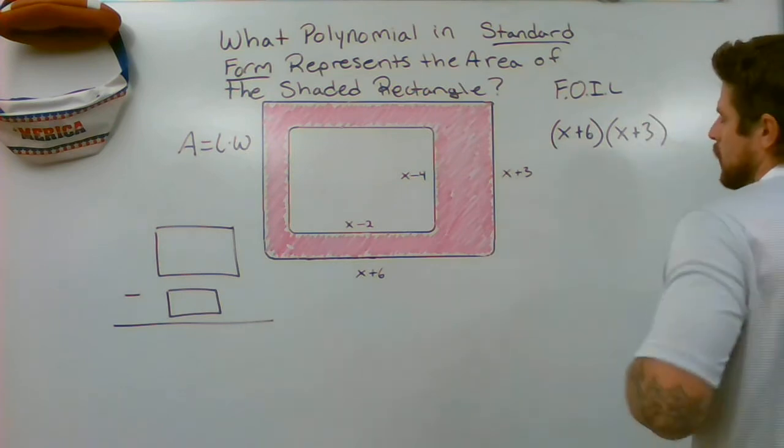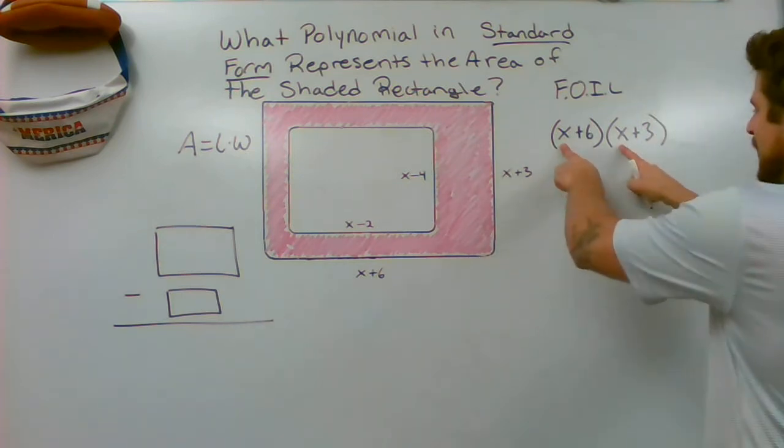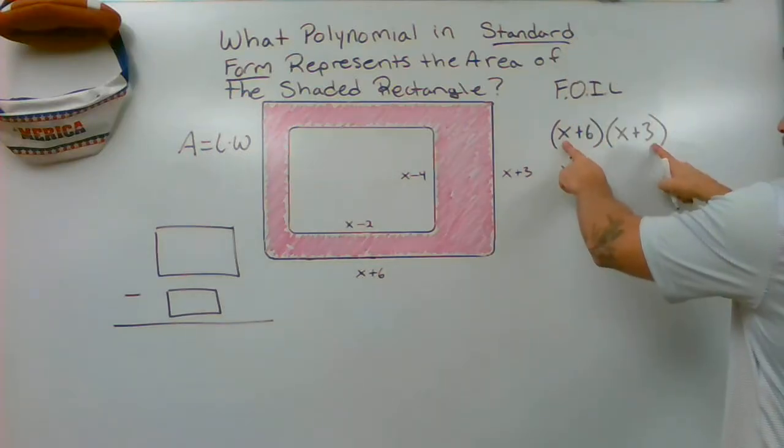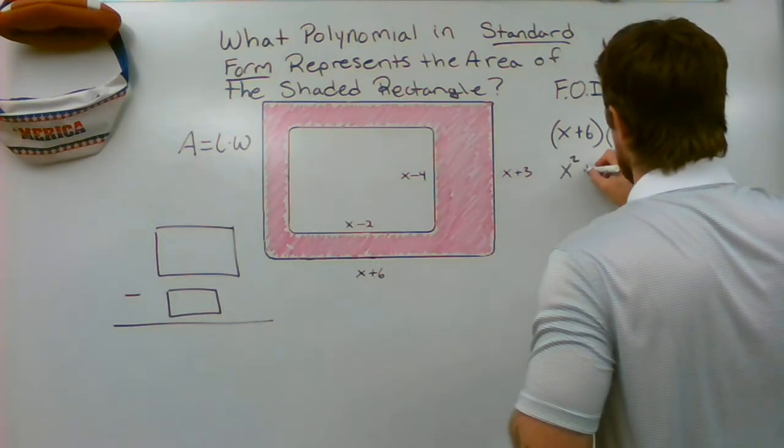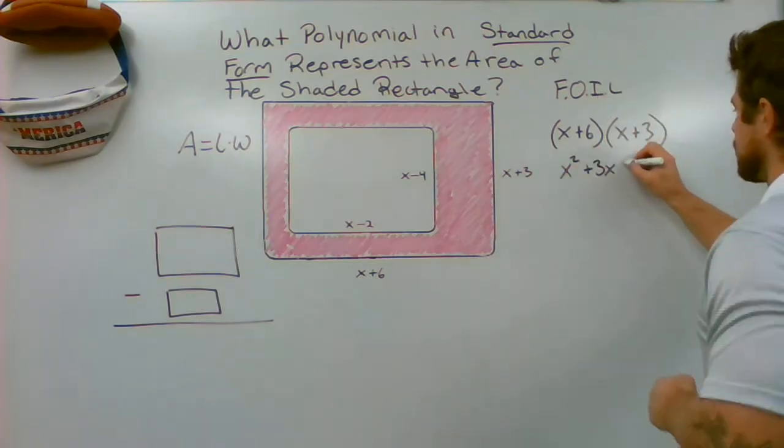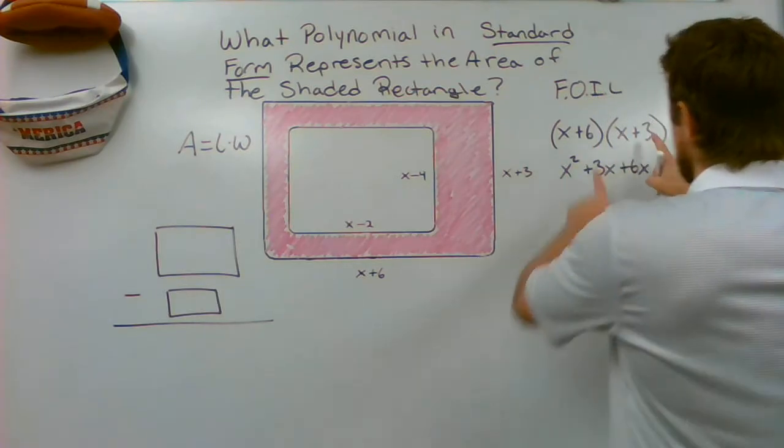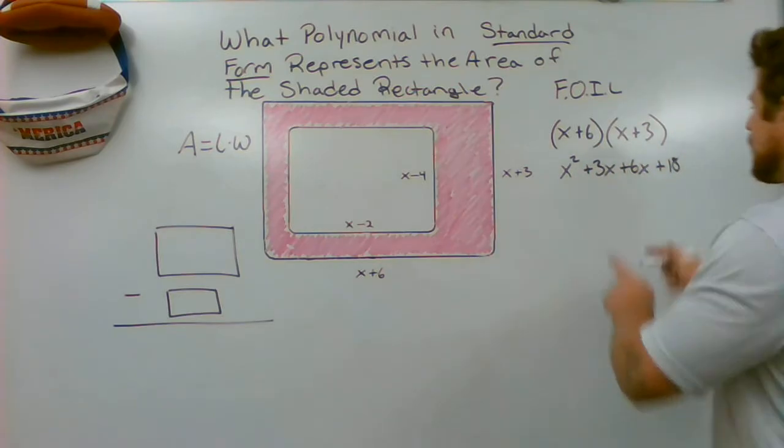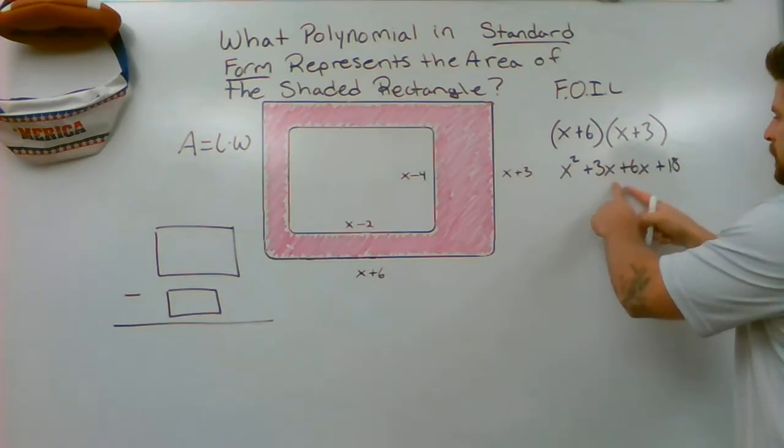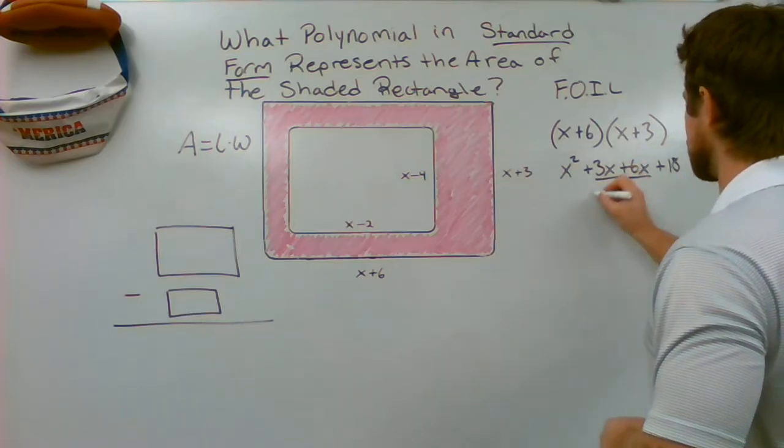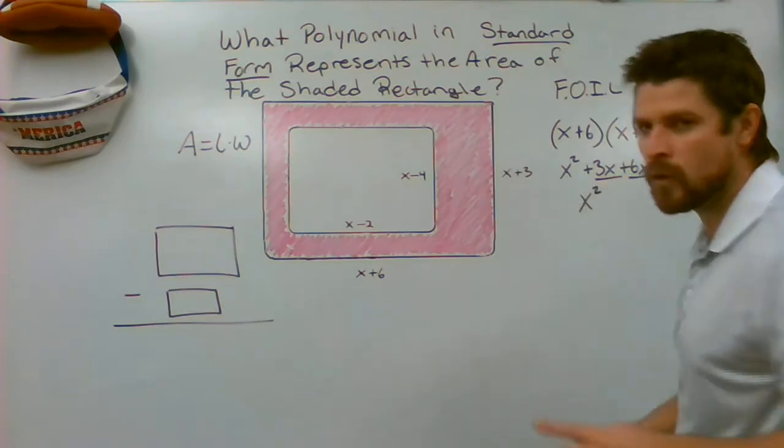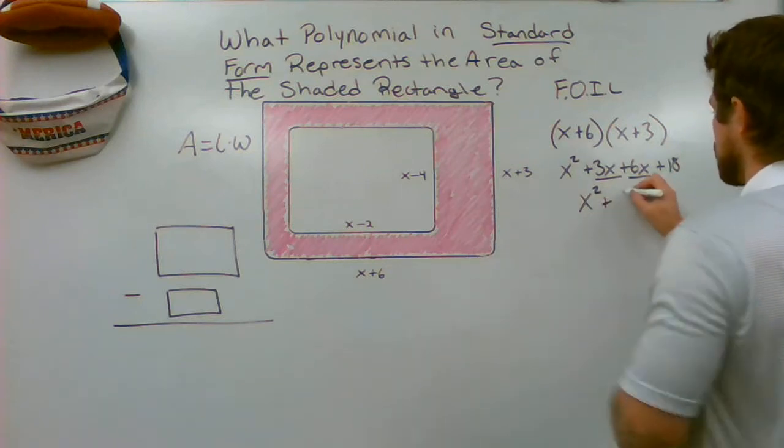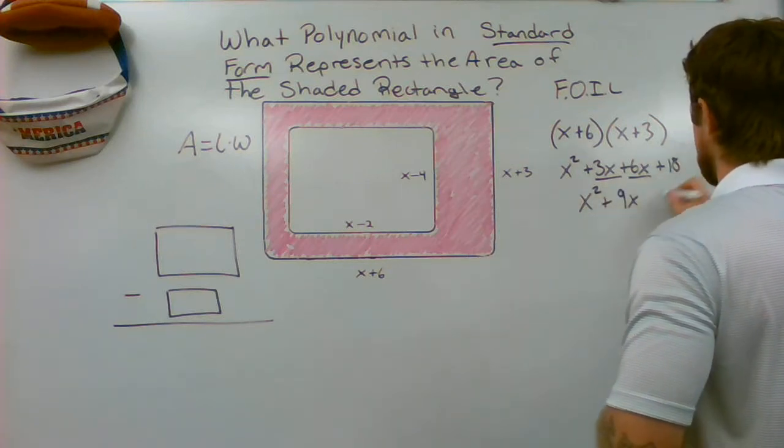I can do the FOIL method very quickly by saying my first terms are an X and an X, so when I multiply those together, I get X squared. My outside is a 3 and an X, so I multiply those together and get 3X. Inside is 6 and X or 6X. And my last is 6 times 3, which is going to give me 18. I then want to combine my like terms of 3X and 6X. So my final standard form polynomial would be X squared plus, these are going to combine to make 9X plus 18.